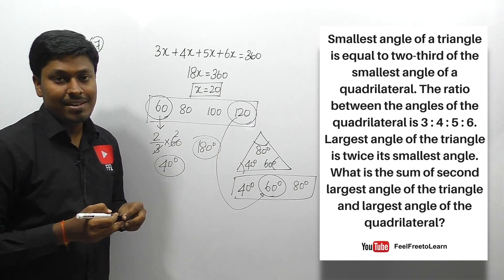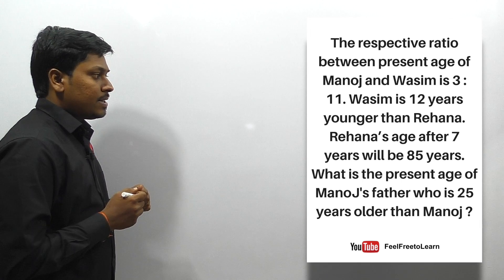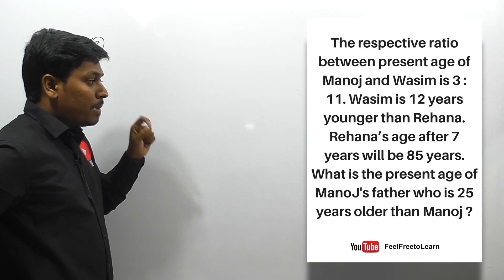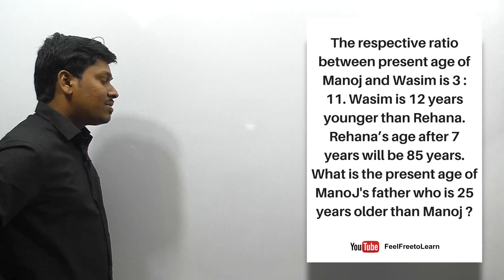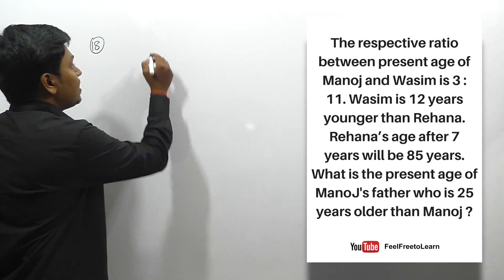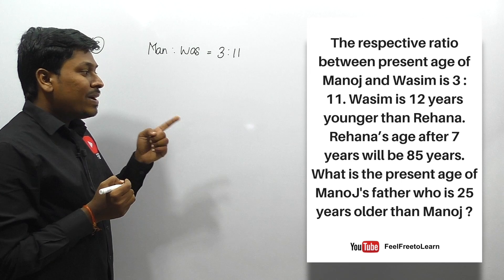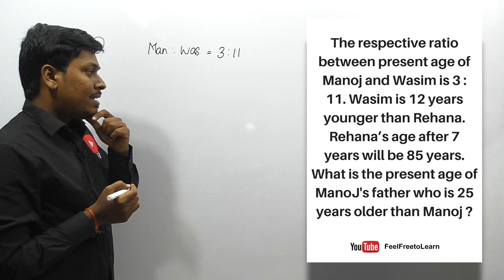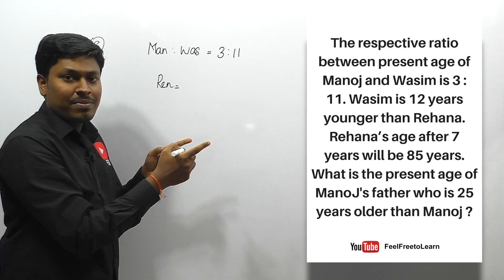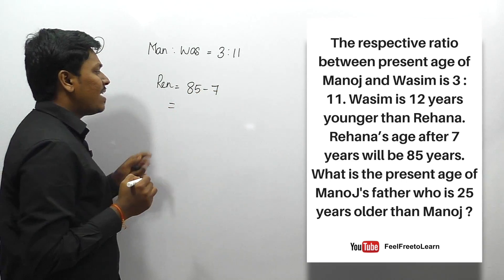Question 18: the respective ratio between the present age of Manoj and Vasem is 3:11. Vasem is 12 years younger than Rina. Rina's age after seven years will be 85 years. What is the present age of Manoj's father, who is 25 years older than Manoj? Rina's age after seven years is 85, so Rina's present age is 85 − 7 = 78.